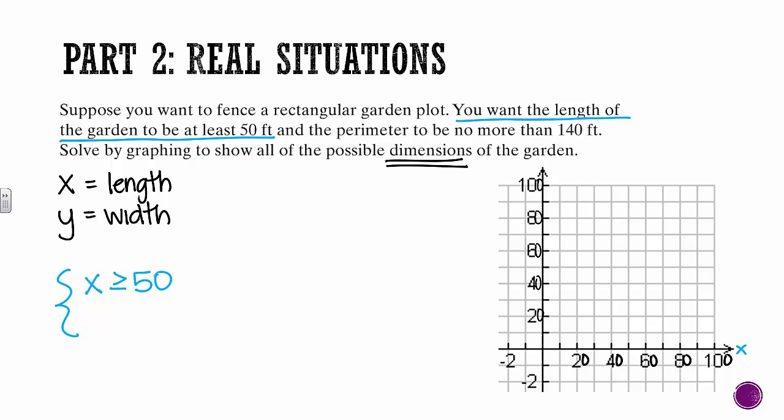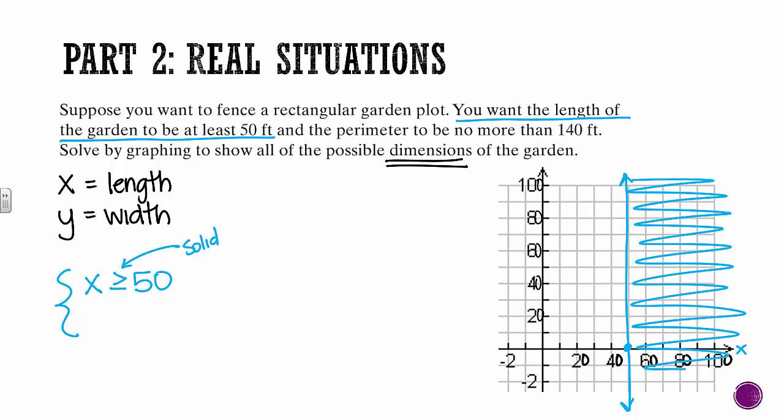So we'll go on the x-axis here and we'll find 50. It's right here. This tells us that we get to draw a solid line. So 50 is included. Because it's just x, we know that it is vertical. And we want all the x's bigger than this. So we want all this stuff over here. Any of those values will work.